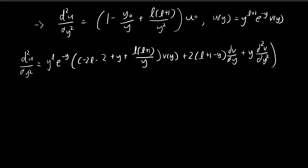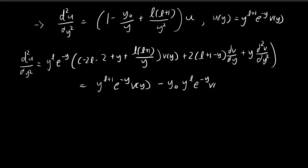I'm going to directly substitute this expression in. On the right-hand side, first we have u, which is equal to y to the power of l+1, times e to the power of negative y, times v(y). Then the second term has y₀, and this y cancels out with one from the exponent, giving y to the power of l, times e to the power of negative y, times v(y). Similarly, the y² takes away 2 from the exponent, giving plus l(l+1) times y to the power of l−1, times e to the power of negative y, times v(y).